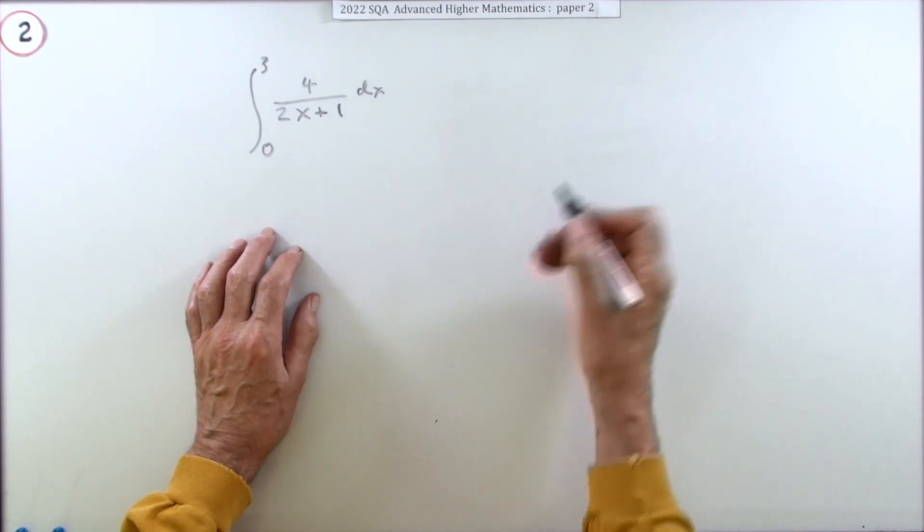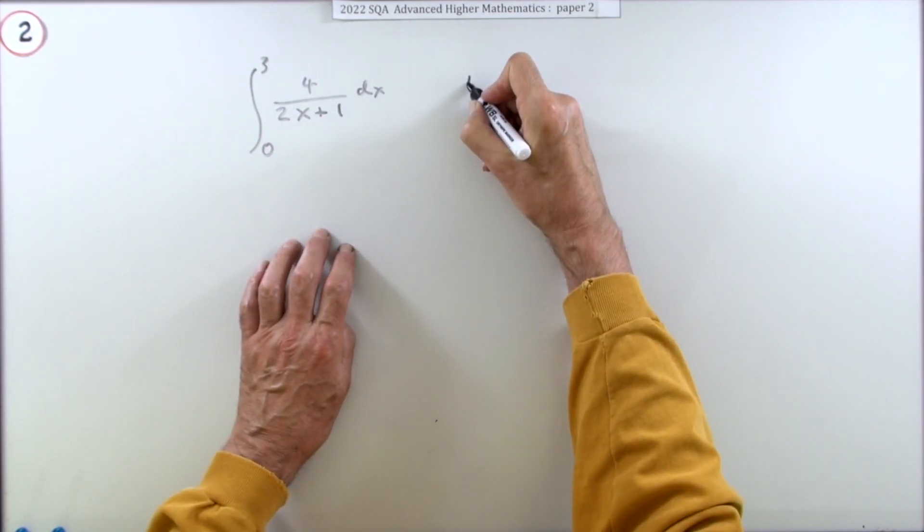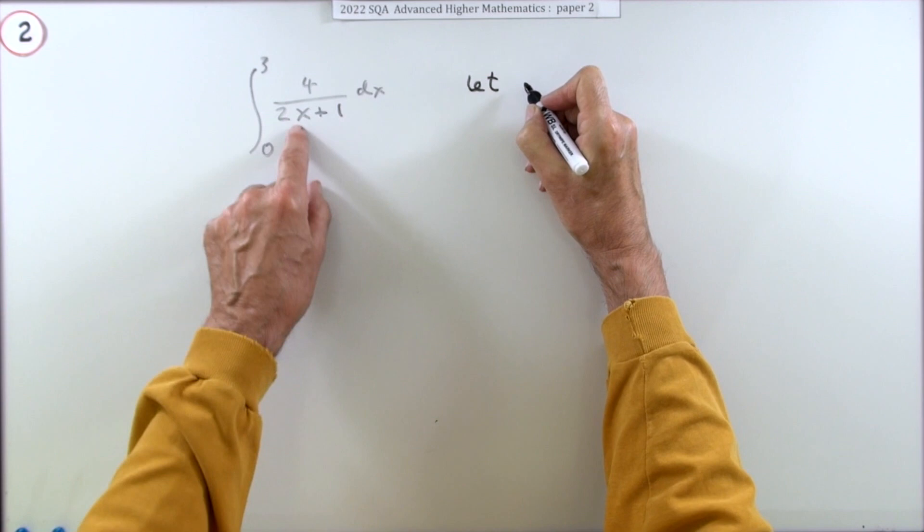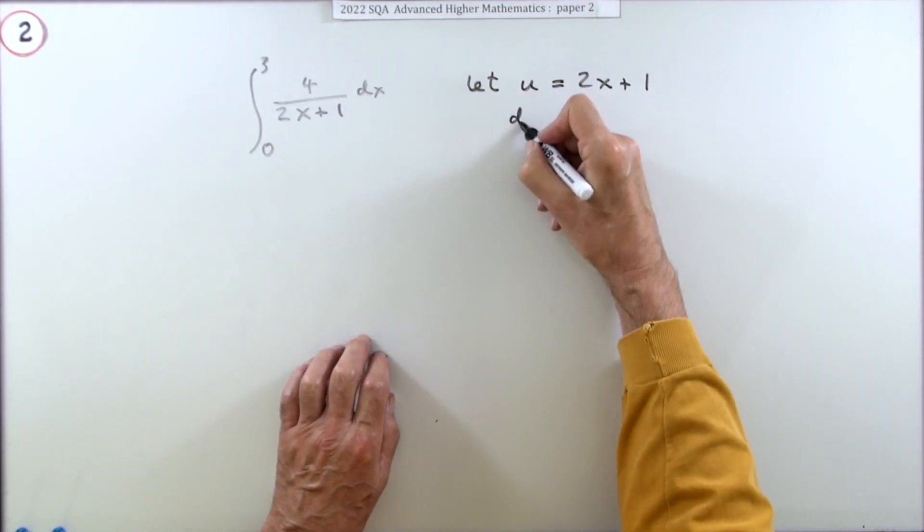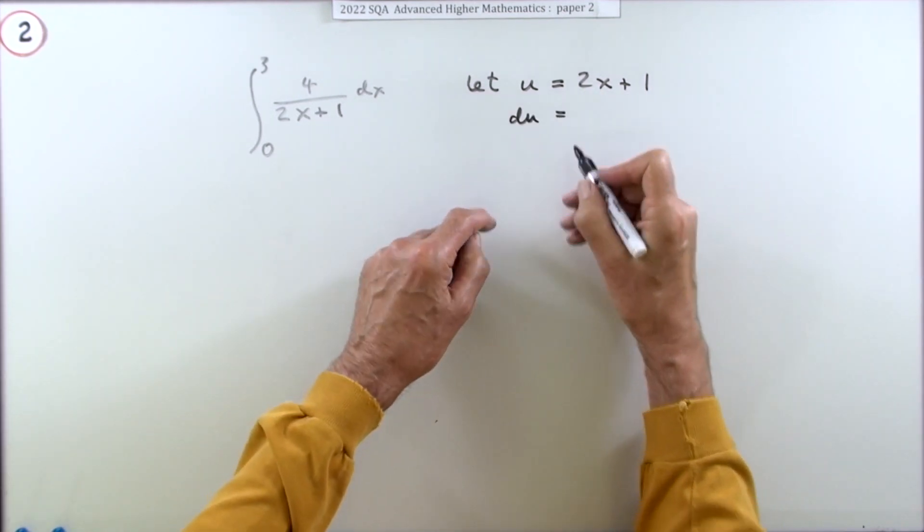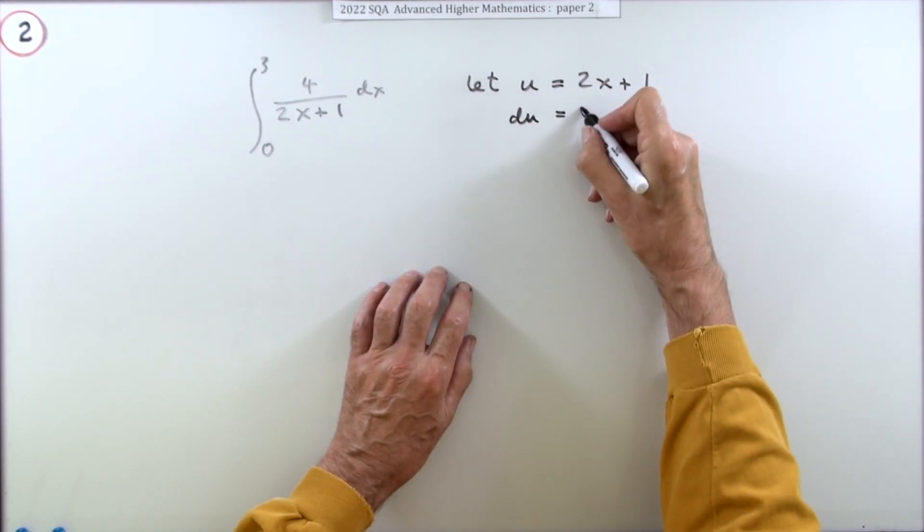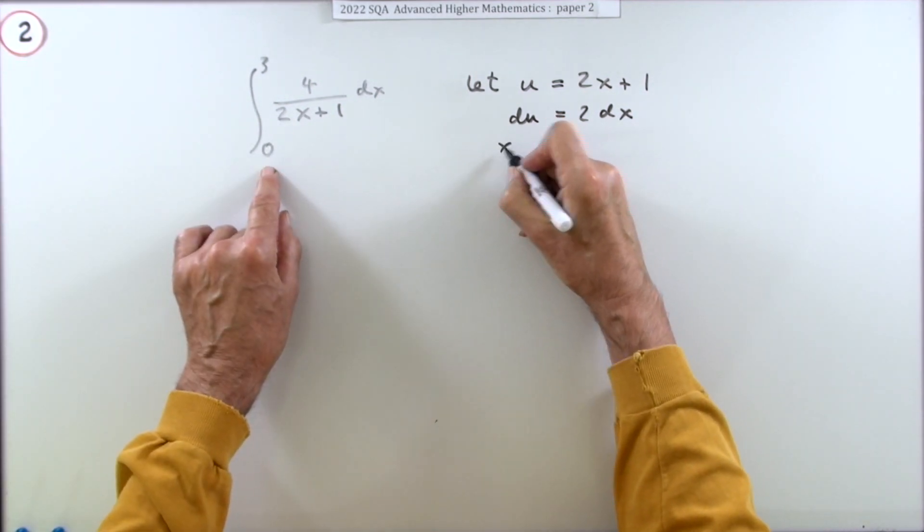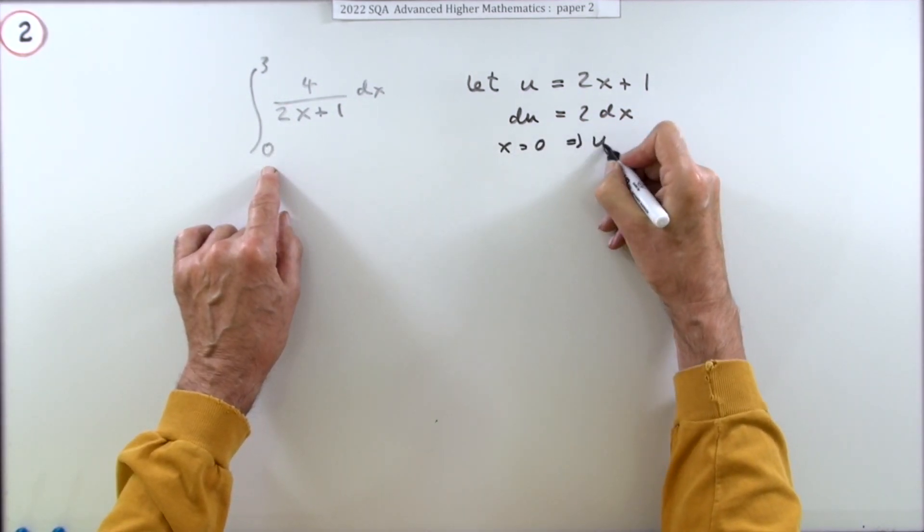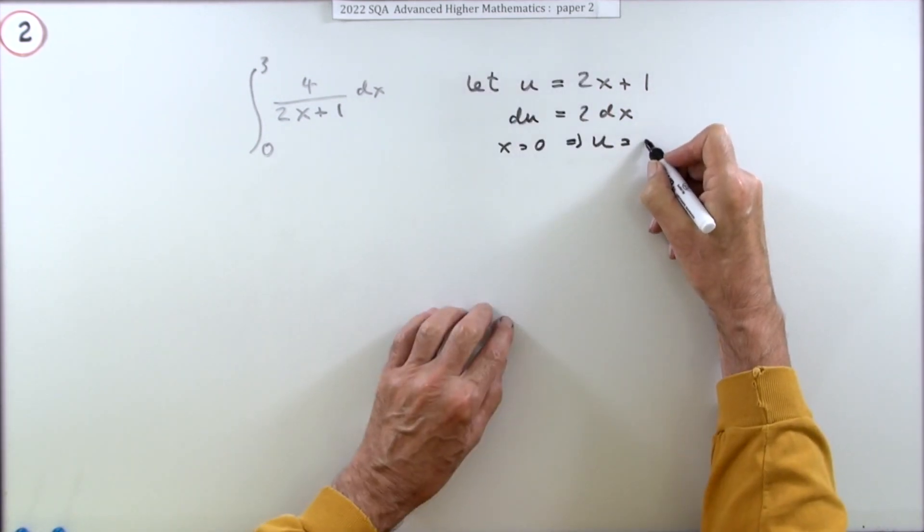You have to use substitution or integration by parts. So if you did think to go substitution, you'd have said let u equal presumably this nasty bit, in which case du would be - remember du by dx but you're going to throw that dx across - then change the limits.